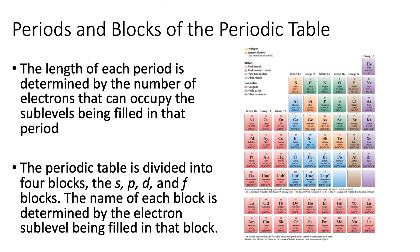Periods and blocks in the periodic table. The length of each period is determined by the number of electrons that can occupy the sublevels being filled in that period. The periodic table is divided into four blocks: the S, P, D, and F blocks. The name of each block is determined by the electron sublevel being filled in that block. We know S orbital can hold a maximum of two electrons, P orbital 6, D orbital 10, F orbital 14. And we know that from last unit.